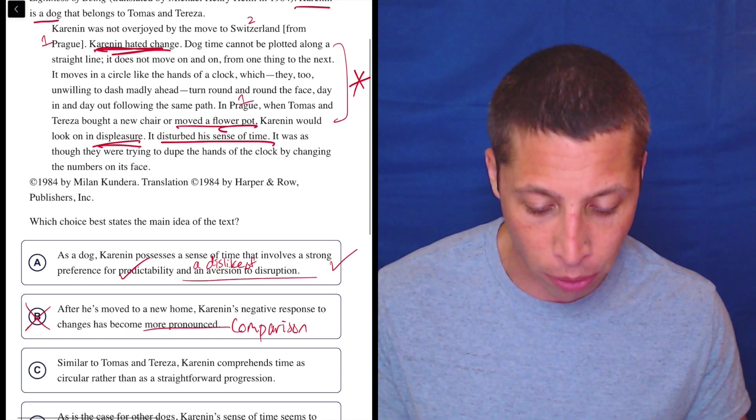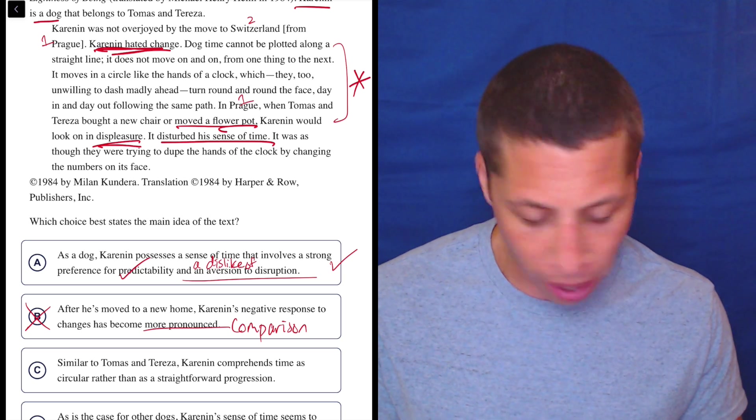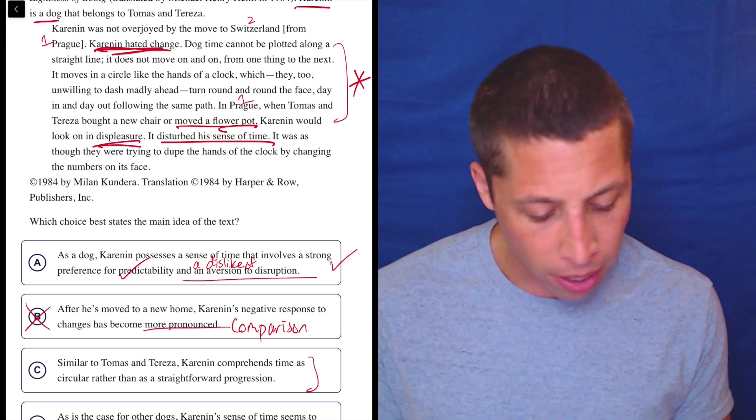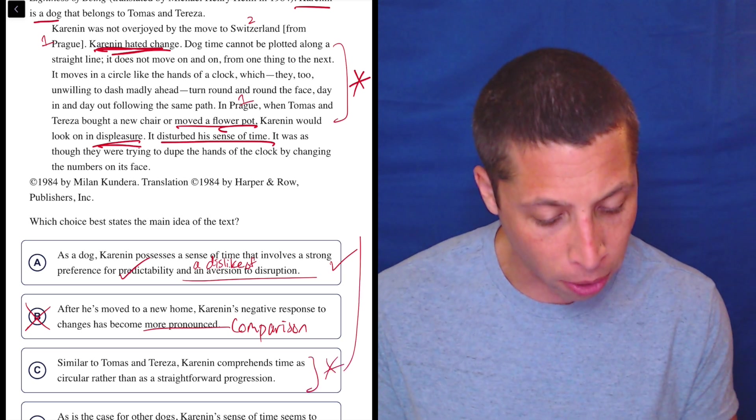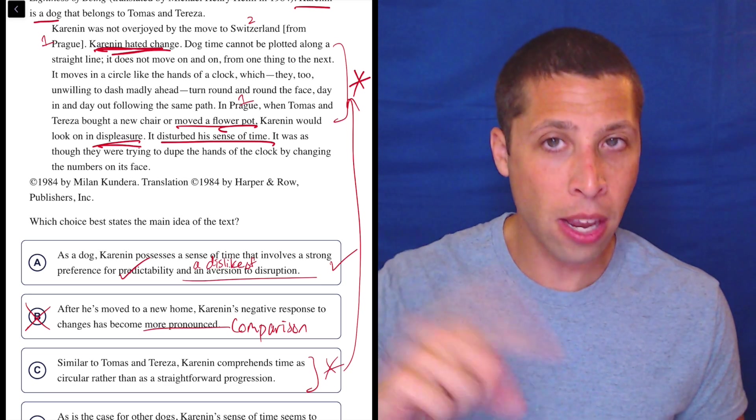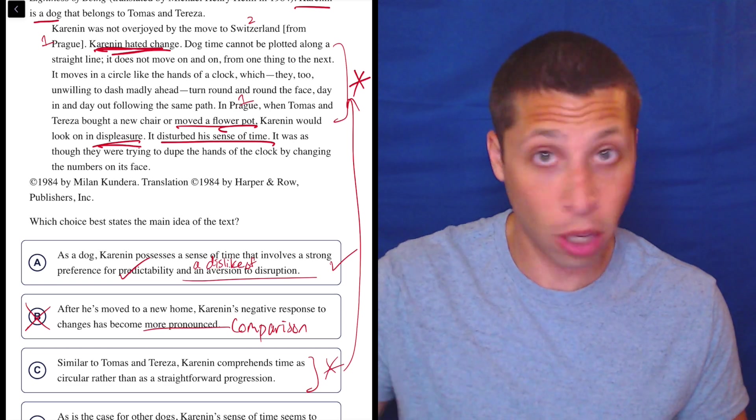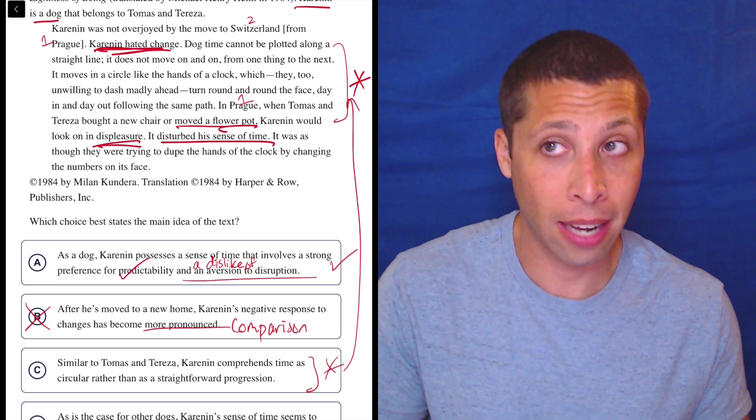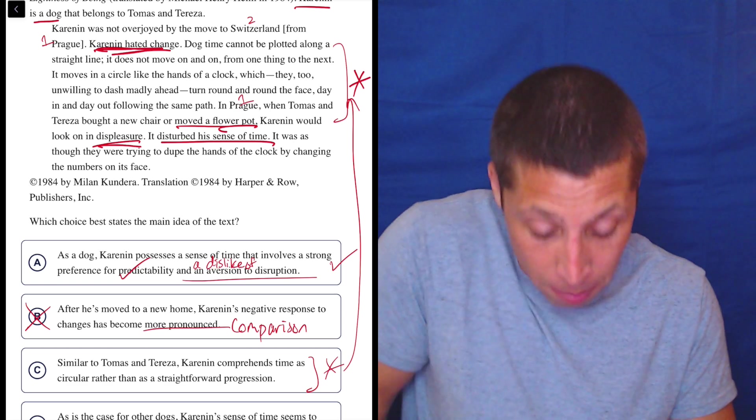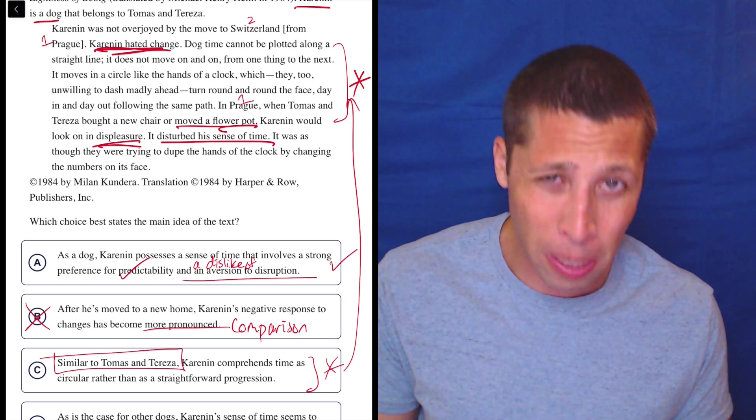C, similar to Thomas and Teresa, Karenin comprehends time as circular rather than as a straightforward progression. Well, here, this is getting to that part there that they're trying to trick you with. They know you're not going to understand that. But they know that you're going to think that it's important and you're going to be like, oh, I need a choice that talks about that. C talks about that. But it makes a bigger error. Maybe this other part is true. But are we comparing the dog to the people?